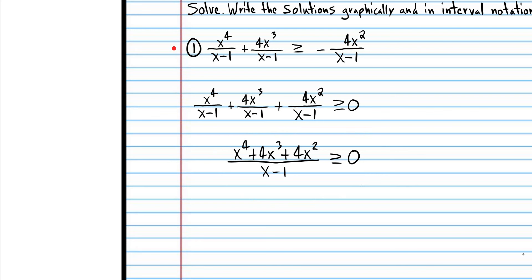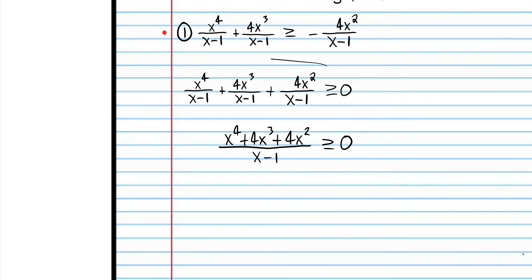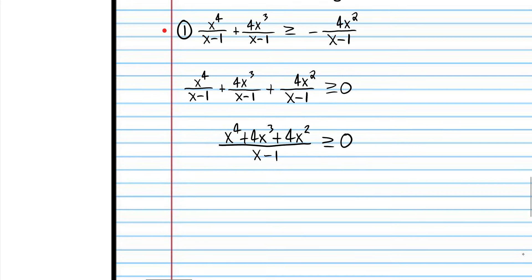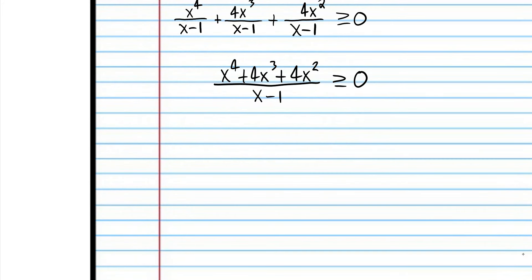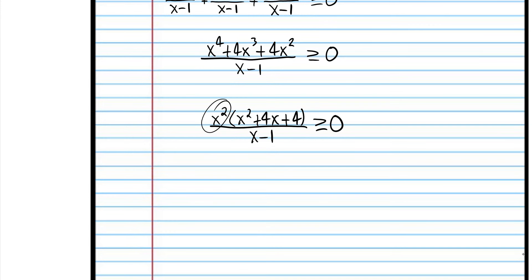I know this seems very complicated but the process is really not complicated at all. Step one: put everything on one side of the inequality. Step two: combine everything to one fraction. Step three: find the values that will make the expression equal to zero or the values that will make it undefined. To do that we have to factor out a GCF.